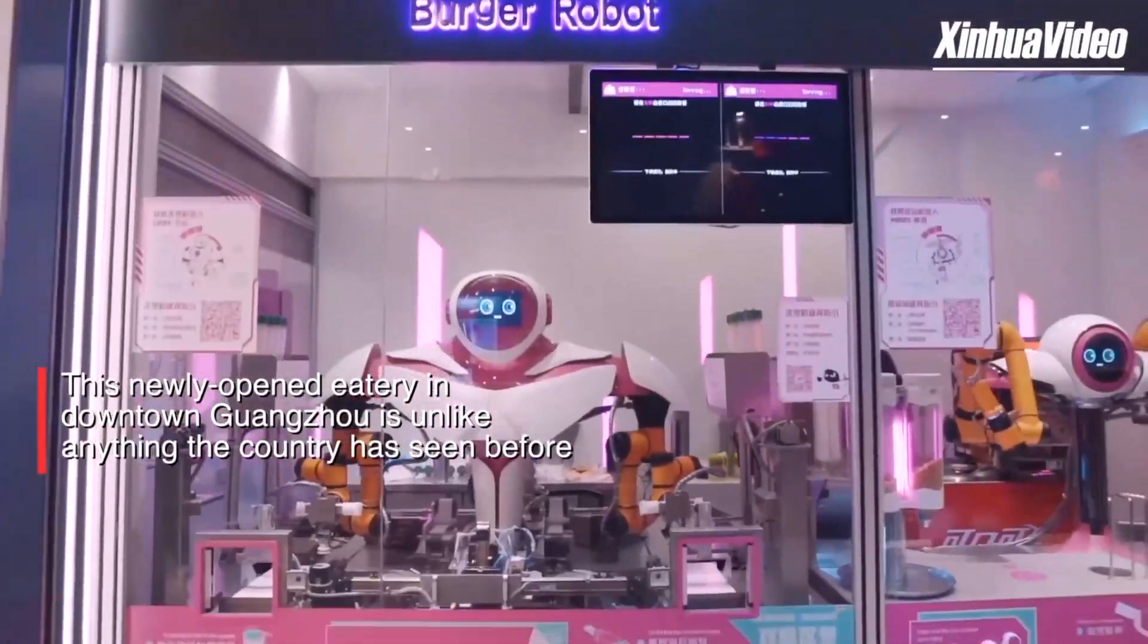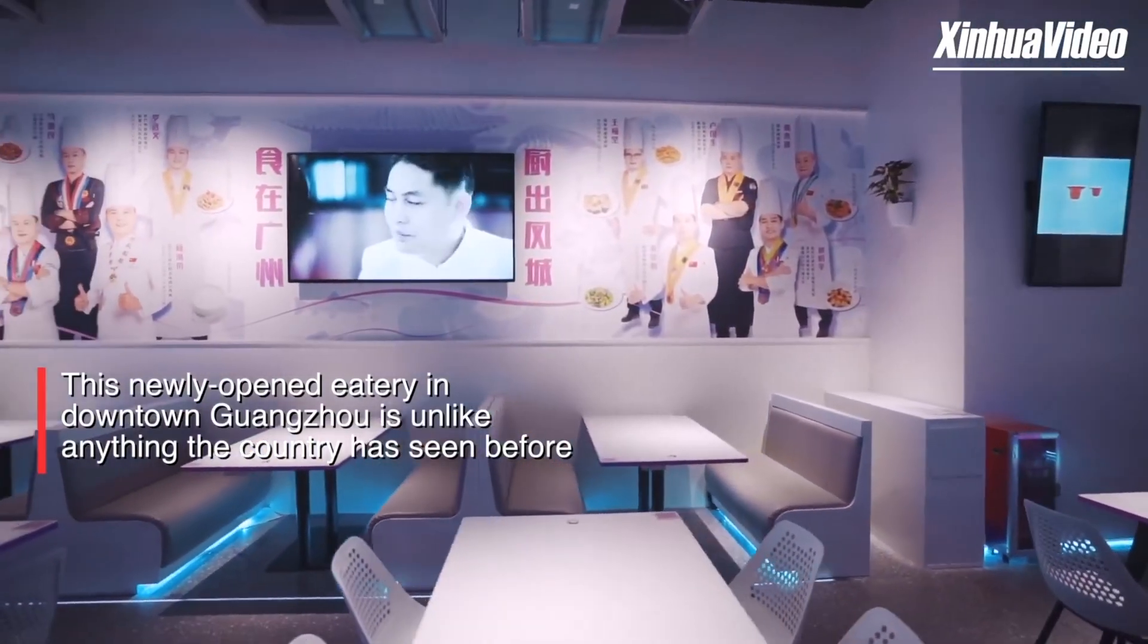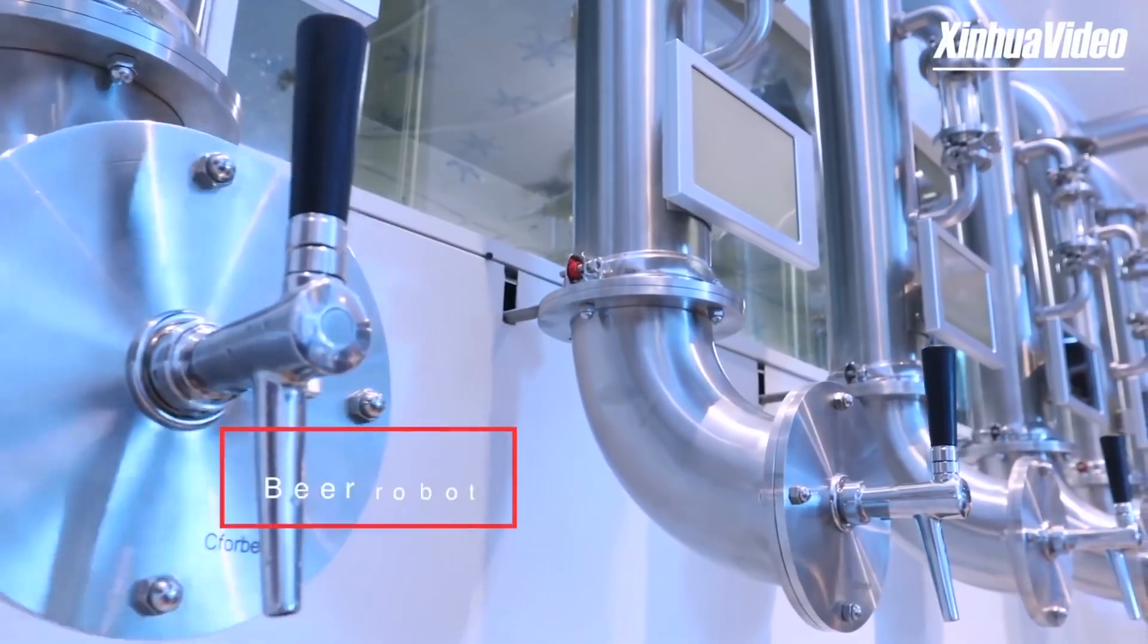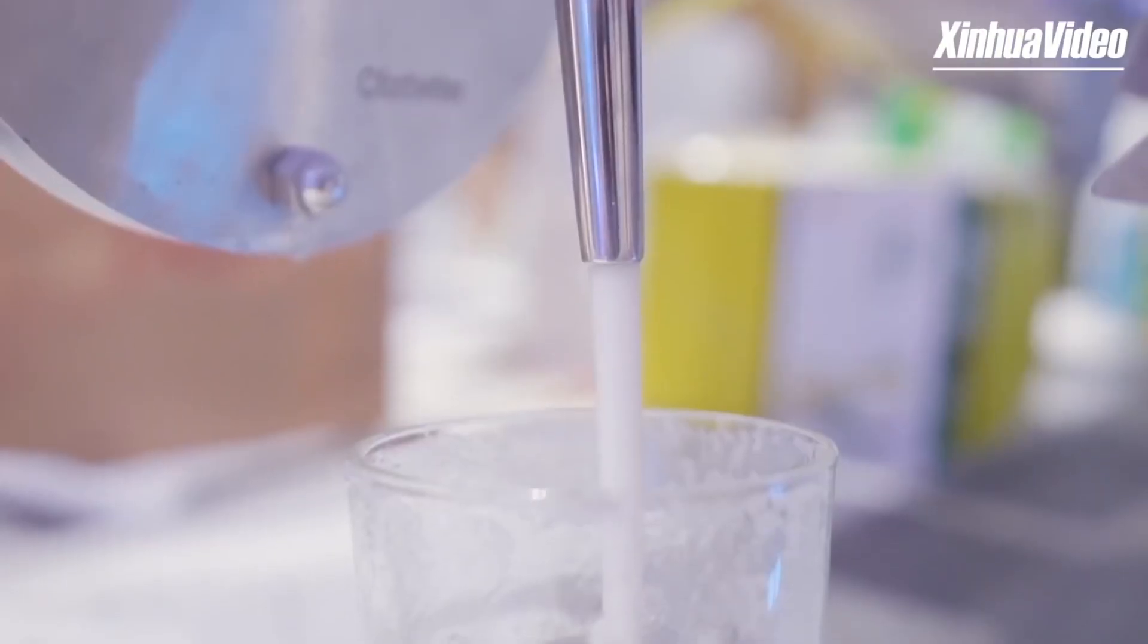At the new Fudum restaurant in Guangzhou, robots do absolutely everything. They greet customers, take orders, cook, make drinks, deliver the meal, and even clean up afterward.